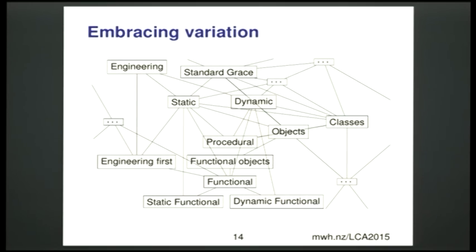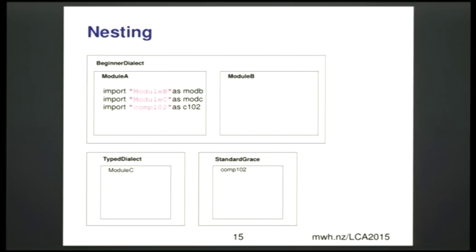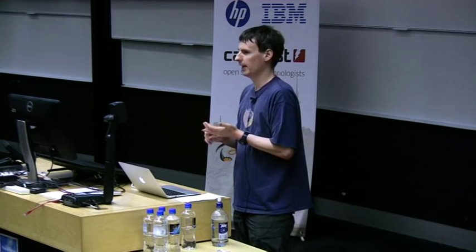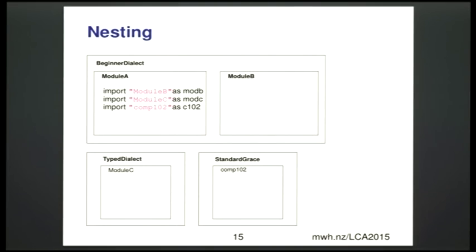How do we extend and restrict the language? Extending works by nesting — a module in Grace is just an object treated as being implicitly inside one of those object literals. The dialect declaration takes your module and puts it inside the dialect module object, giving you automatic lexical access to all the methods defined there. Writing a dialect is just writing methods you want available. You don't need to know about parsers and compilers — you only need to know the language itself.